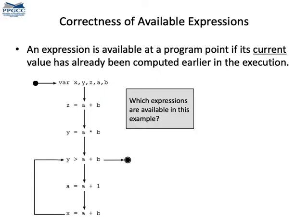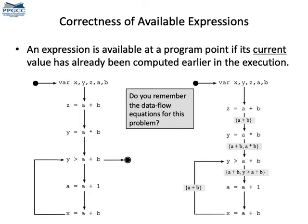Let me show you another example. This time, let's take a look into available expressions. Do you remember that analysis? An expression is available at some program point if its current value has already been computed before that point and we can reuse it there. If you want to practice, you can compute available expressions in this example before I show the result. Here they are, the available expressions. You can see them on the code on the right side of the figure.